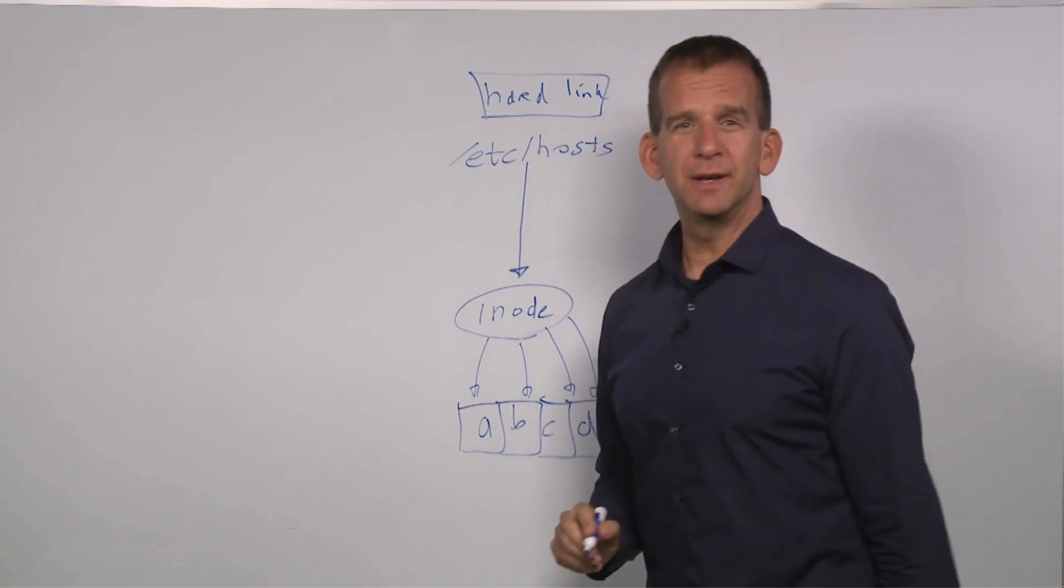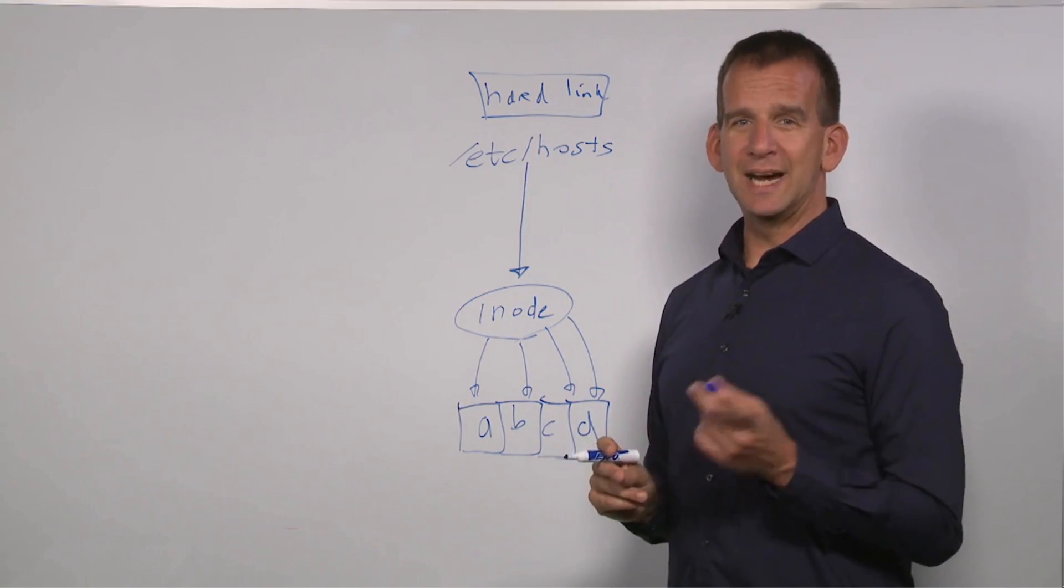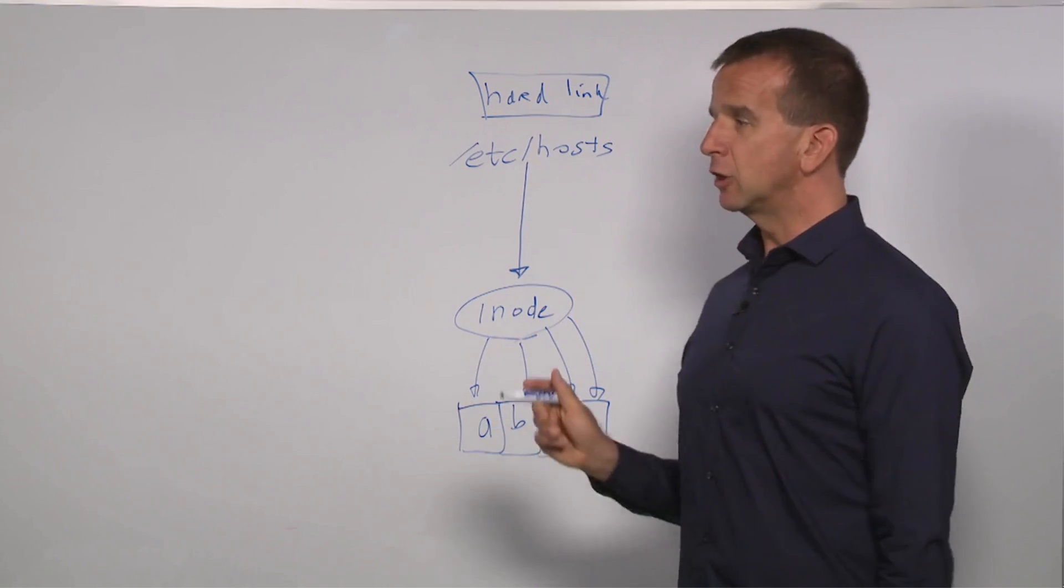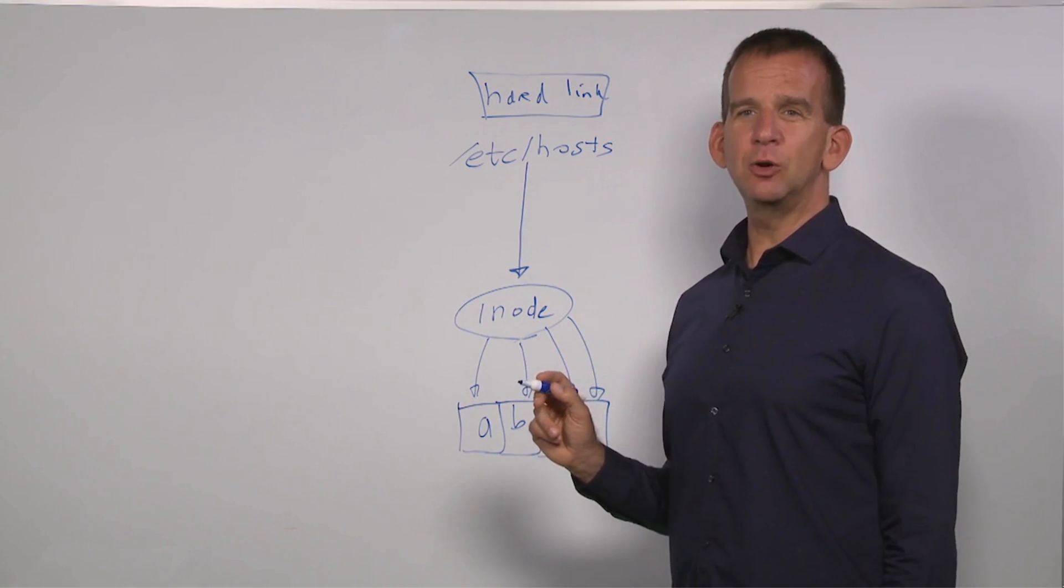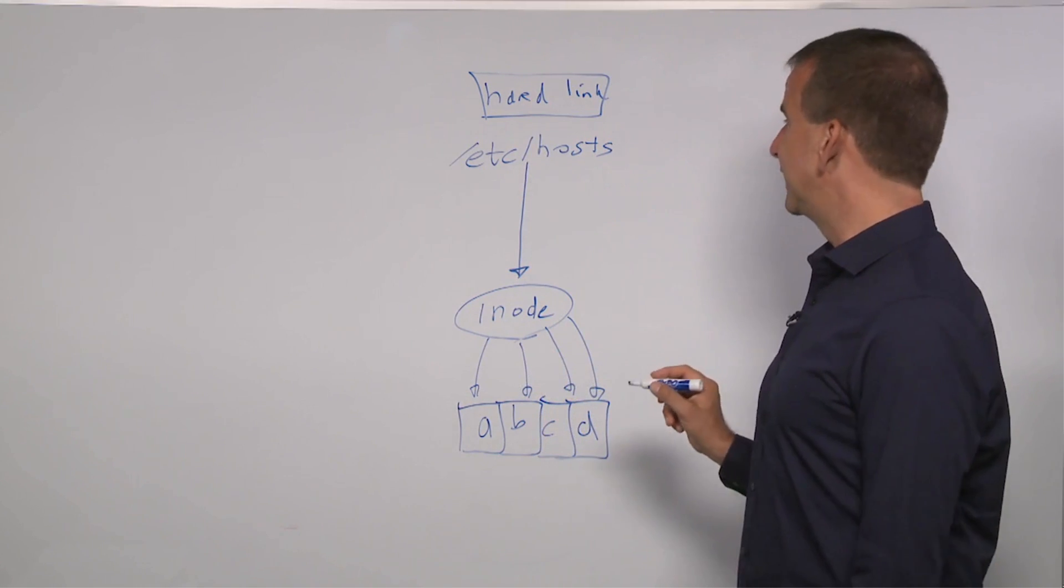And the interesting thing about the Linux file system layout is that you can have one hard link, which is one name that is assigned to an inode, and you can have multiple hard links as well.